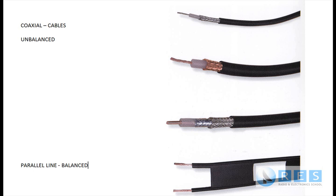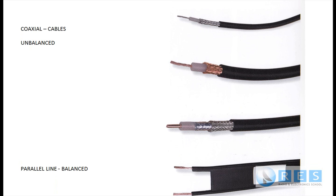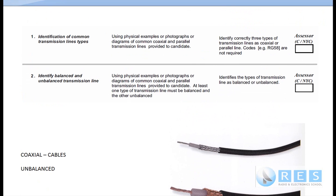And that's all you have to do to answer competencies 1 and 2. If you go on and give additional information, you run the risk of saying something wrong and being graded as not yet competent. All you need to do is identify a coaxial cable as a coaxial cable, identify a parallel line as a parallel line, and know that coaxial cables are unbalanced lines and parallel lines are balanced lines. And you'll have no problem with 1 and 2.